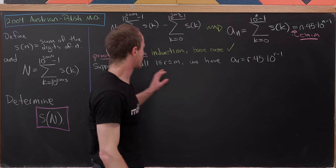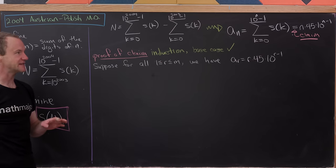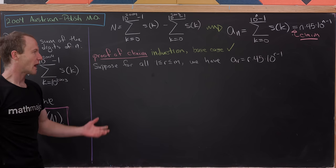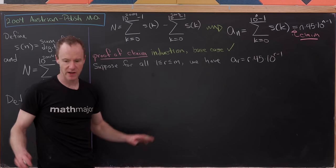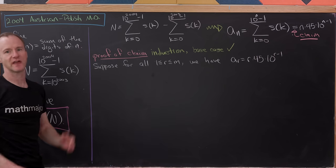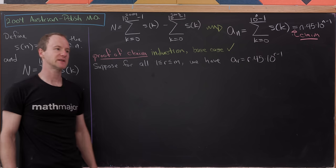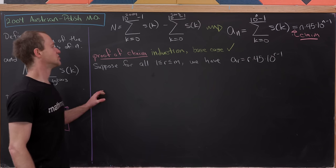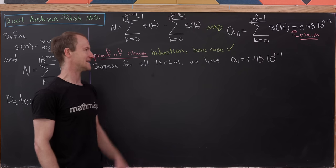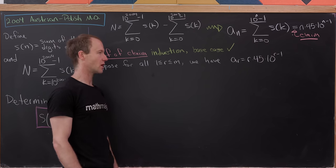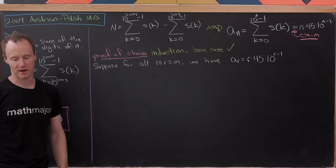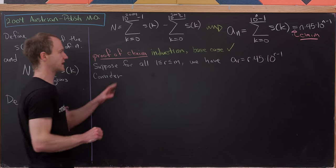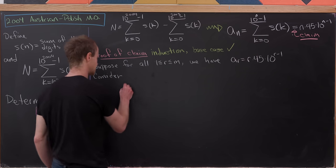Jumping into our proof by induction of the claim that A_n = n × 45 × 10^(n−1). The base case is done by the exploration on the last board. For the induction hypothesis — using strong induction — we assume that for all r between 1 and m, A_r = r × 45 × 10^(r−1). We now consider the unproven case: A_(m+1).